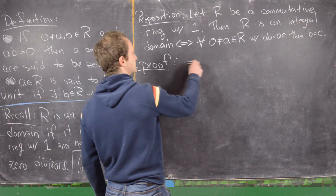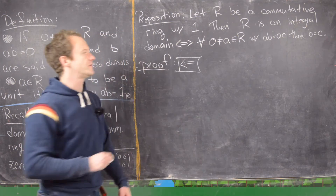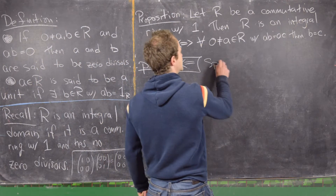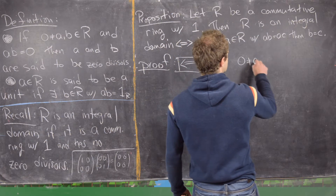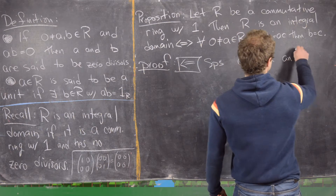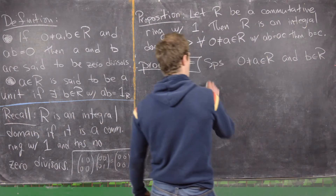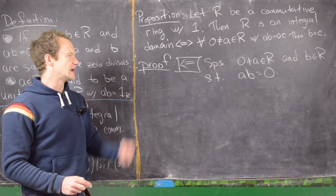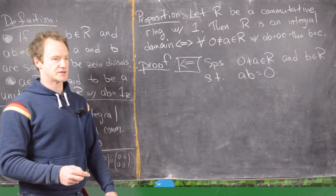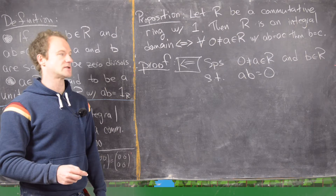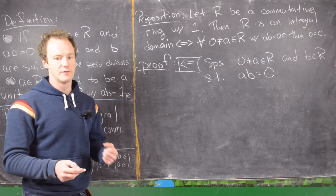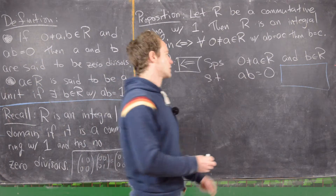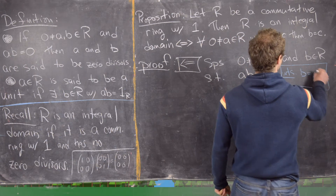Now for the reverse direction, we want to prove R is an integral domain. Suppose we have a nonzero element A from R and some element B from R such that A times B equals zero. Being an integral domain means no zero divisors, so we start with this equation and want to show that B equals zero.